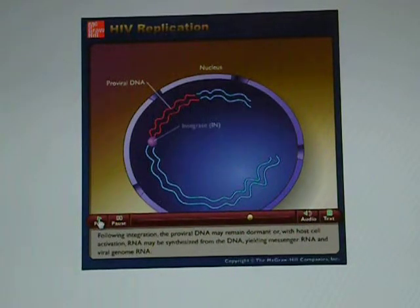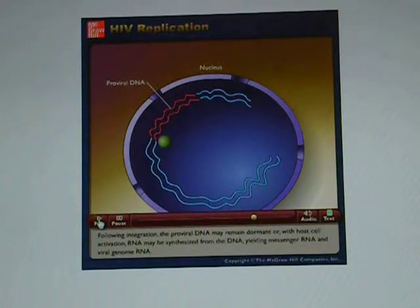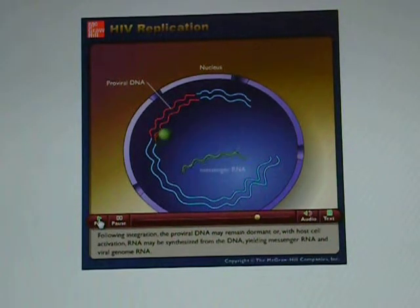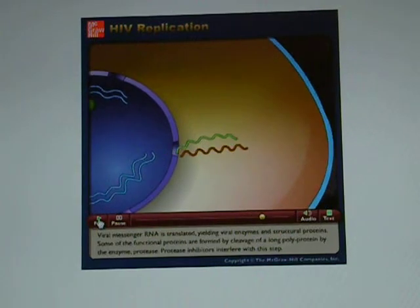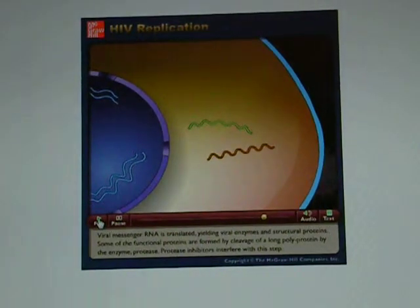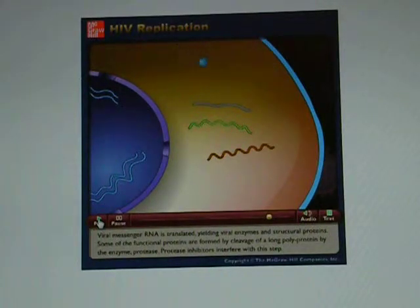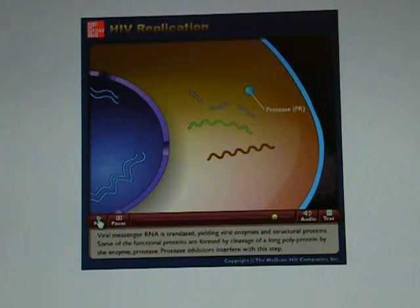Following integration, the proviral DNA may remain dormant or, with host cell activation, RNA may be synthesized from the DNA, yielding messenger RNA and viral genome RNA. Viral messenger RNA is translated, yielding viral enzymes and structural proteins. Some of the functional proteins are formed by cleavage of a long polyprotein by the enzyme protease. Protease inhibitors interfere with this step.